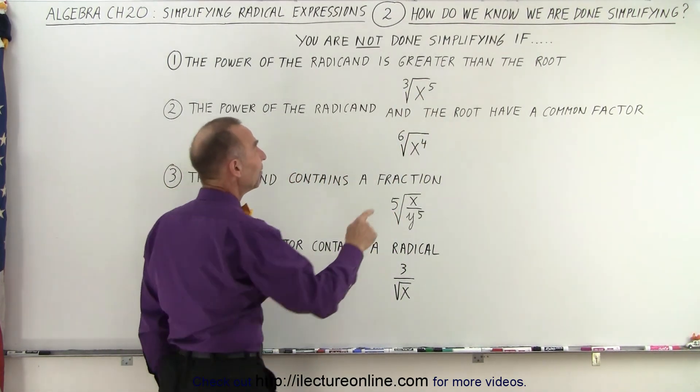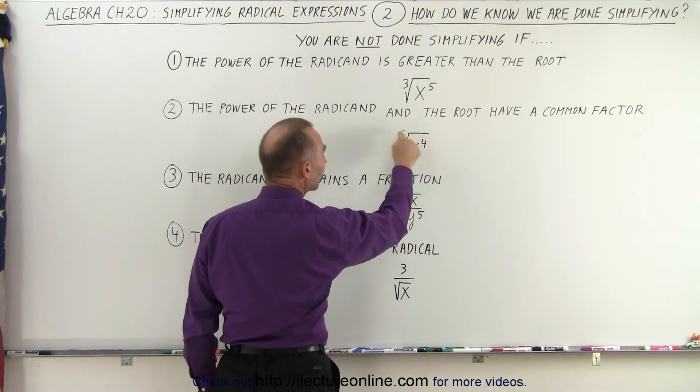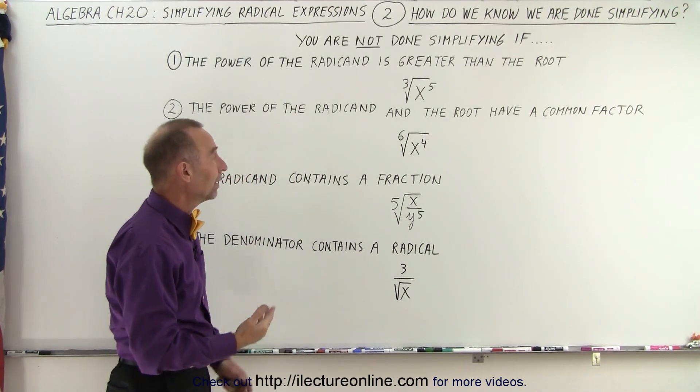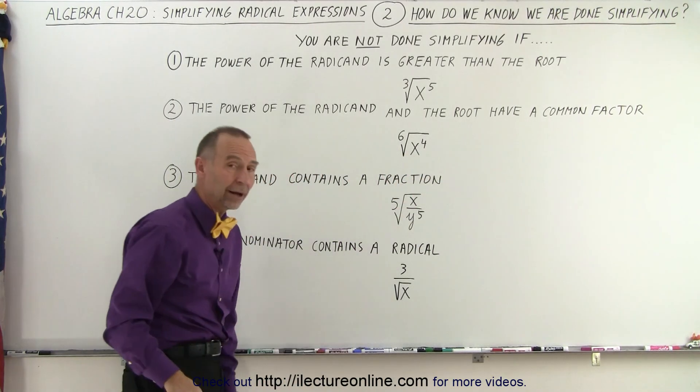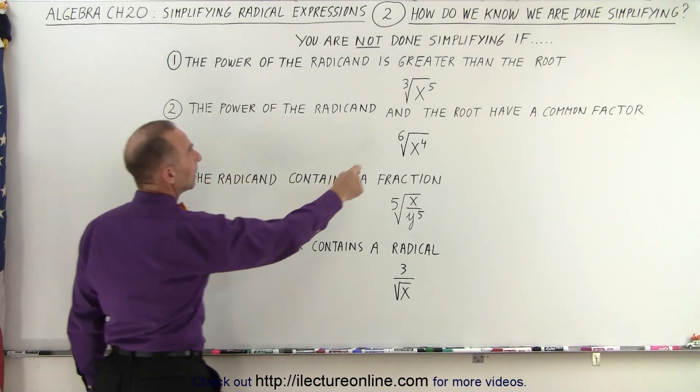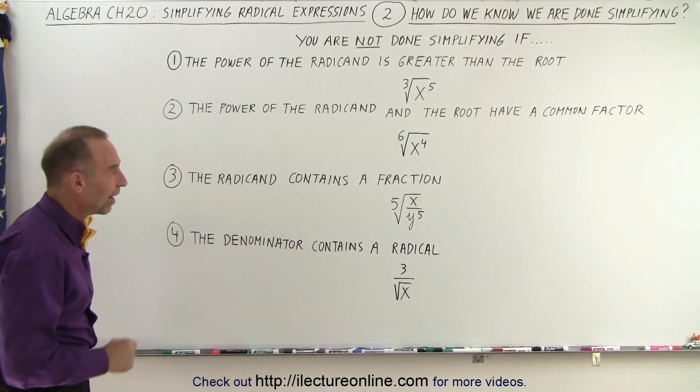But you're not done if both the root and the power of the radicand have a common factor. They can both be divided by two, so you should do that, and this becomes the cube root of x squared. So, we'll show you later how to do that. But again, you're not done if both the root and the power of the radicand have a common factor.